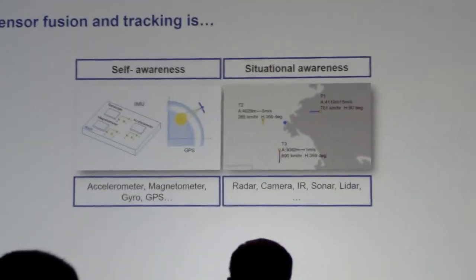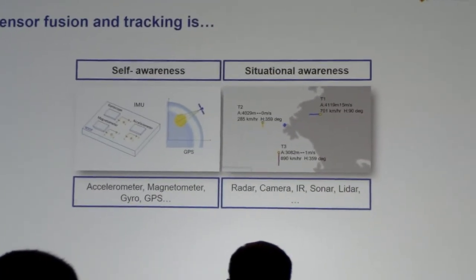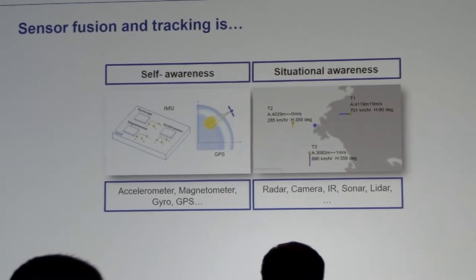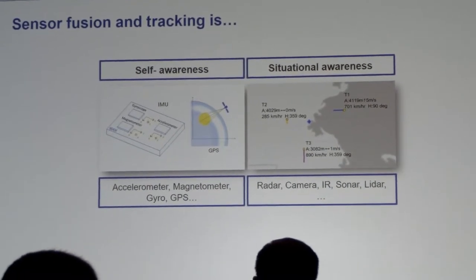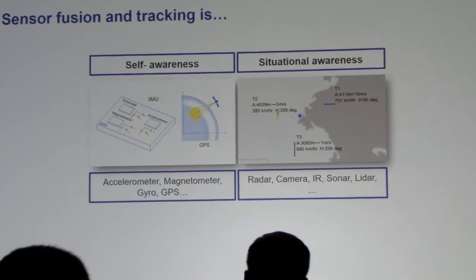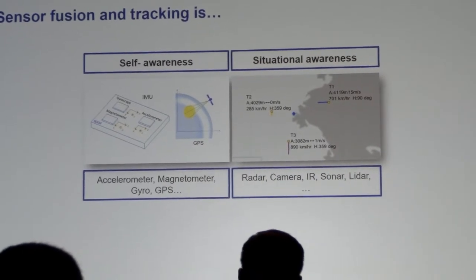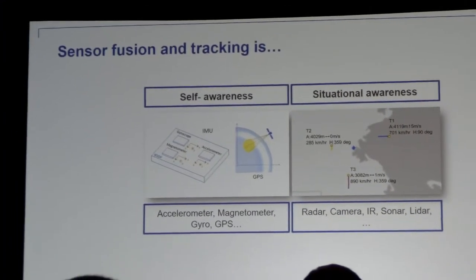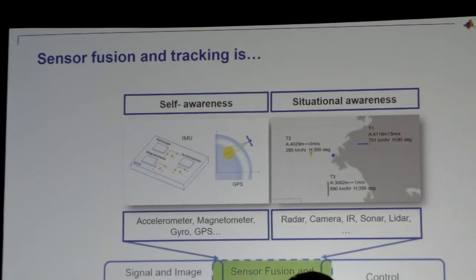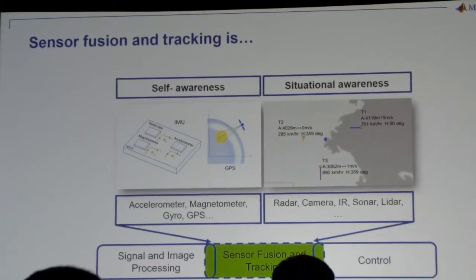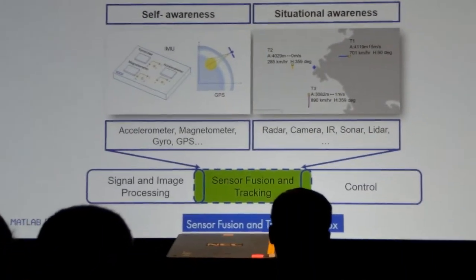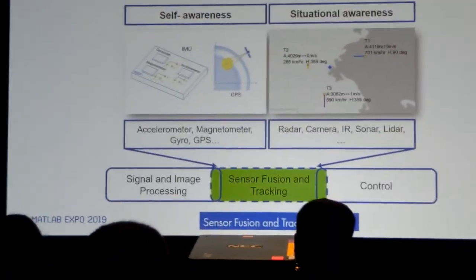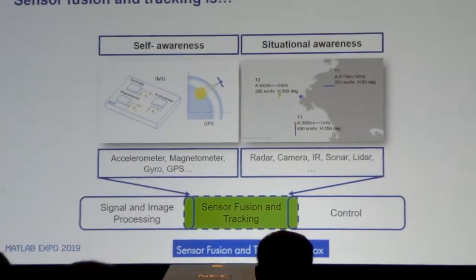The other side — the situational awareness side — is really looking at what's going on around the system. These are sensors like LiDAR, radar, camera, EOIR — sensors that are looking external to the platform. And really where sensor fusion and tracking comes in, and the reason we're so excited about it, is that it really bridges domains that MathWorks has been strong in.